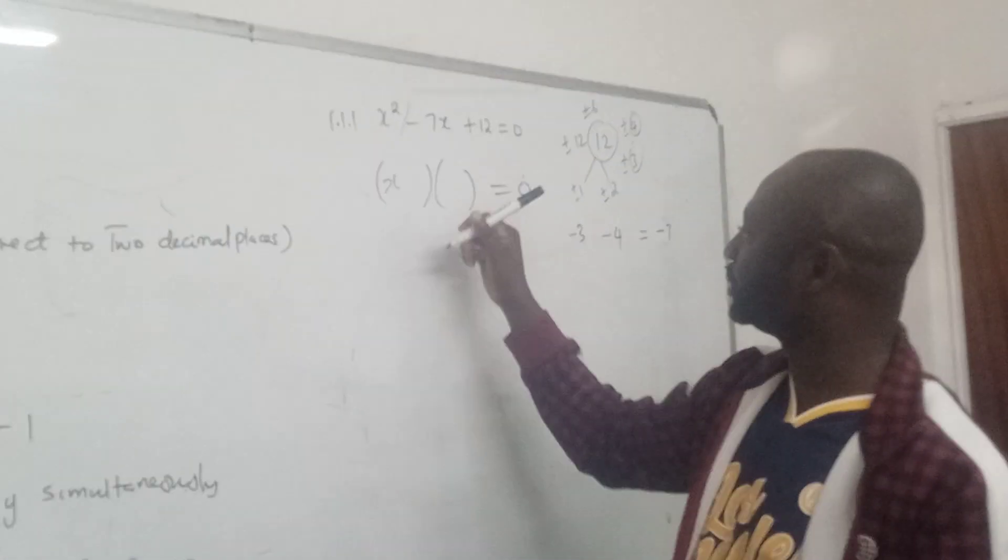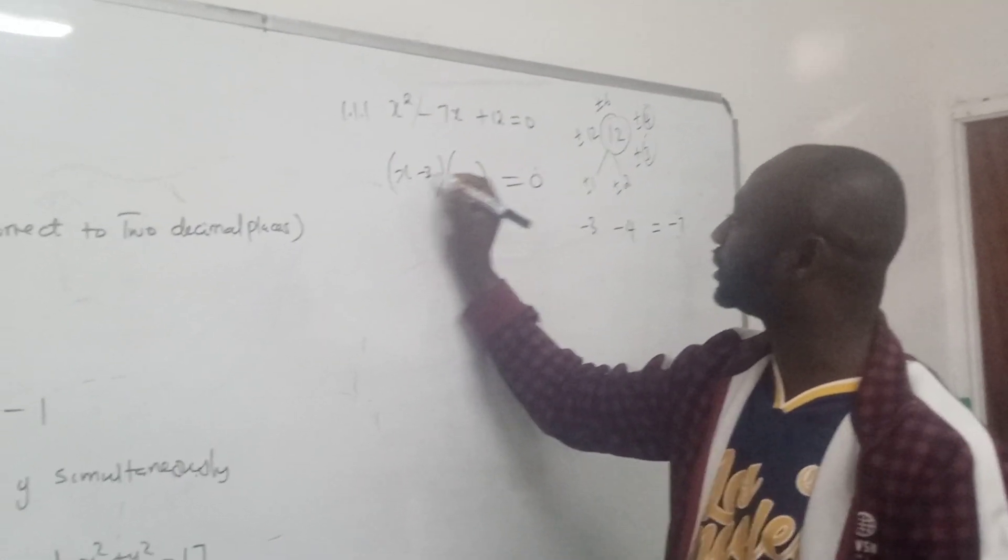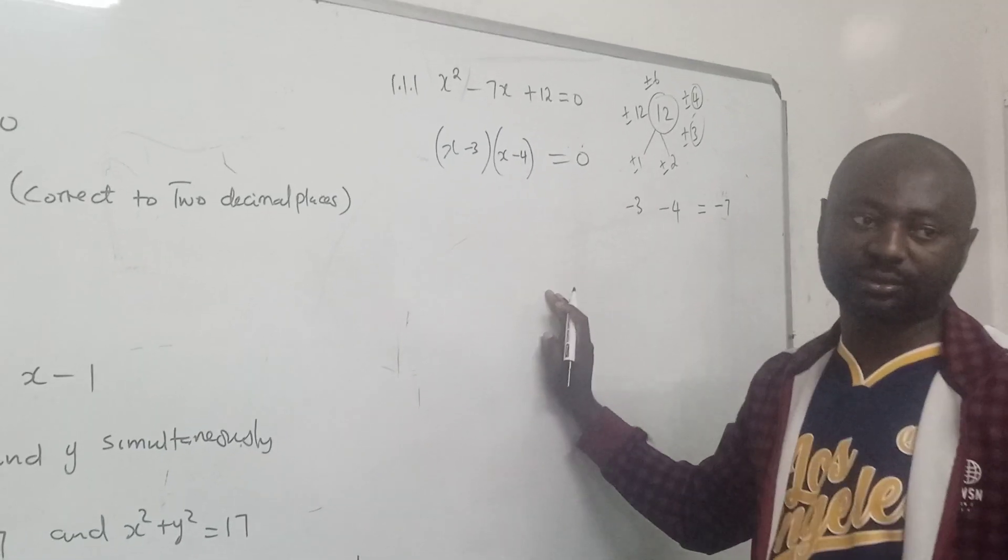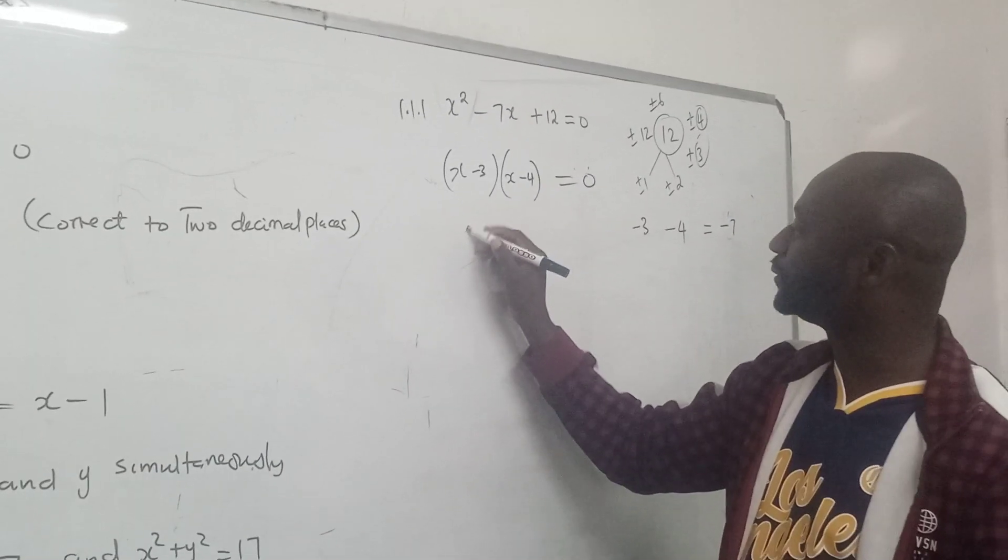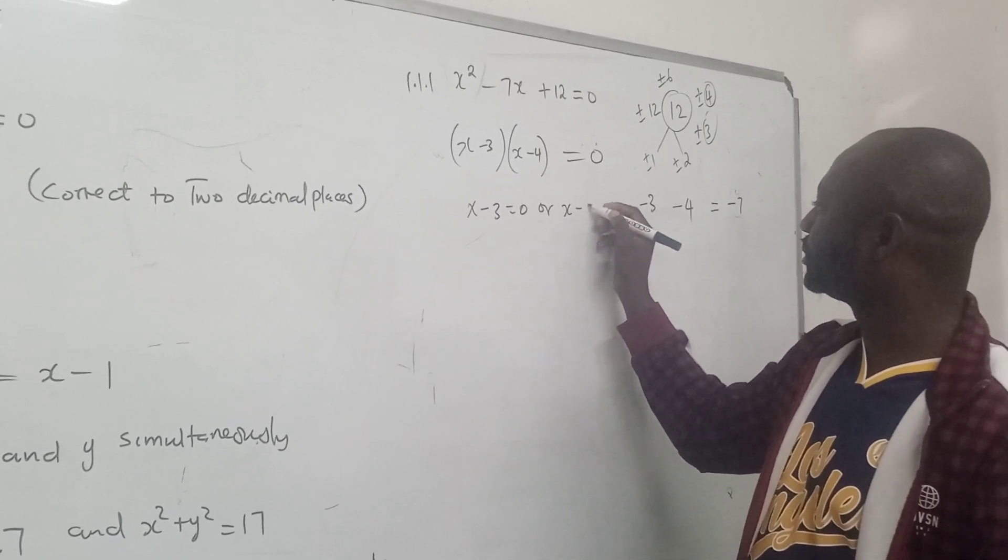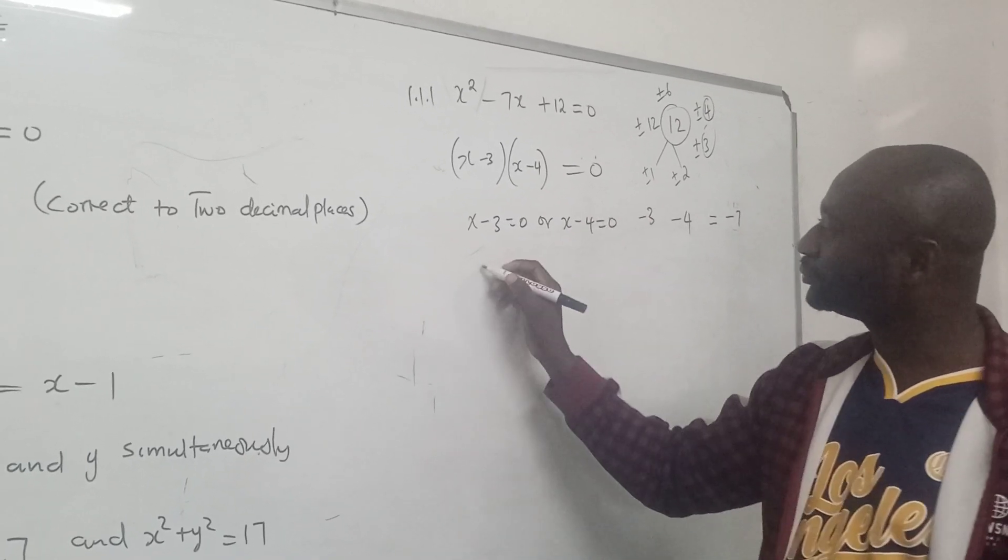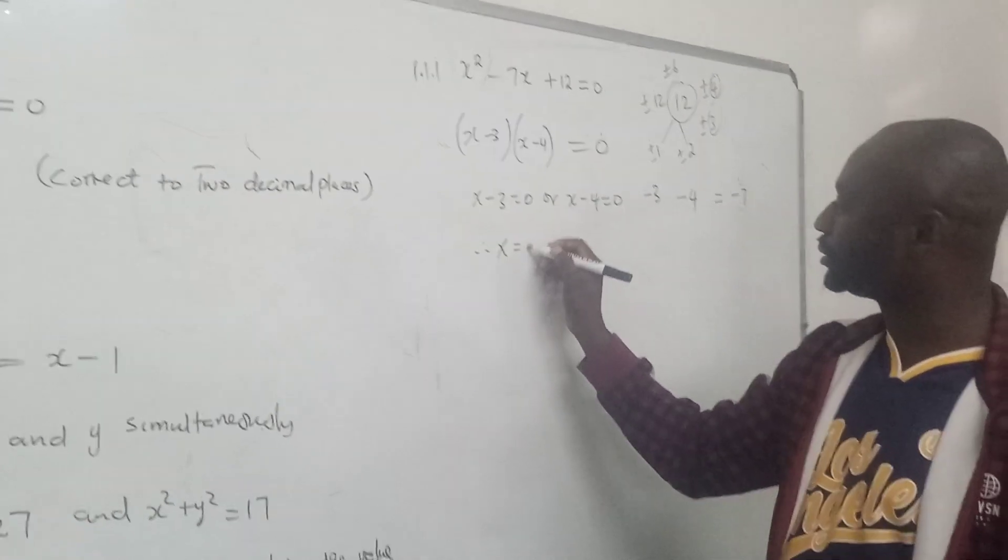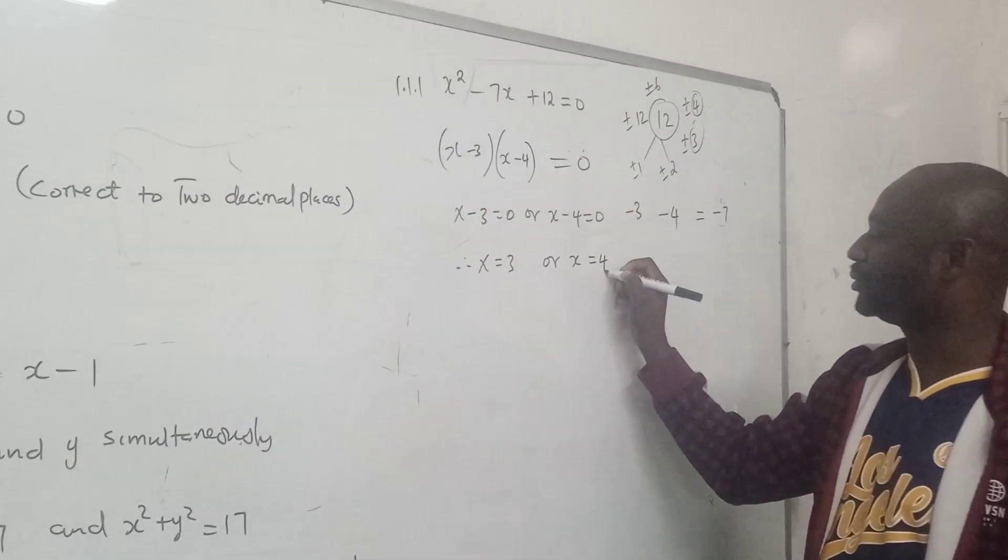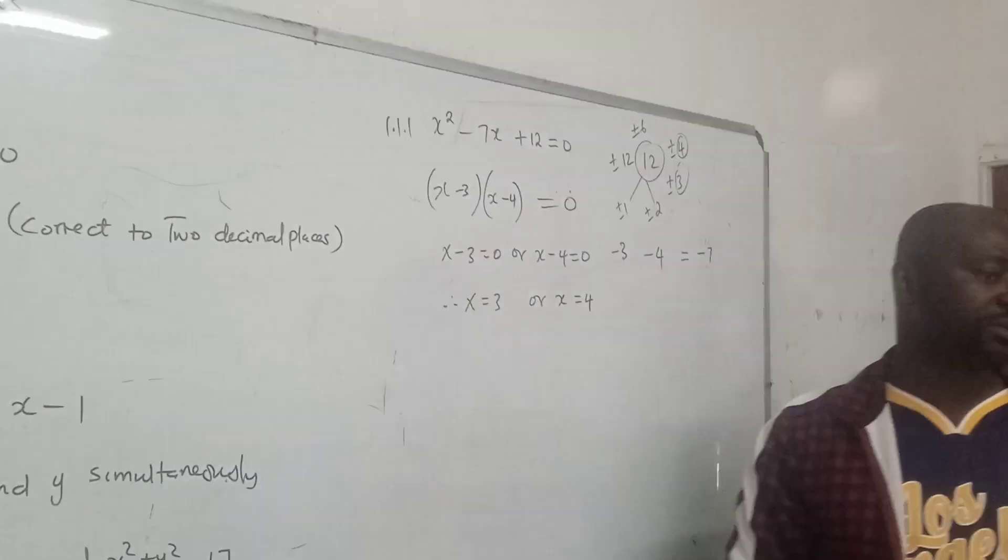Negative 3 minus 4 is equal to minus 7 and negative 3 times minus 4 gives you positive 12. So in that case you open two brackets which equals 0. Factors of this x squared is x, so you can say x minus 3, x minus 4 equals 0. Therefore, x is equal to positive 3 or x is equal to 4.